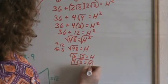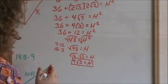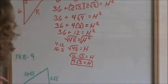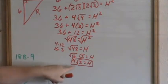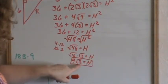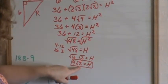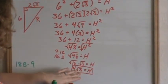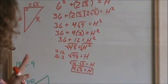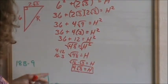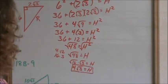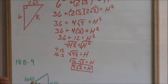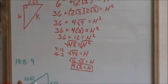Remember to simplify your radicals all the way down. There are no units on this because the original triangle did not have units, so I do not know if that's inches, yards, feet, centimeters, or meters. You can put the word 'unit': 4 square root of 3 units, if you want.